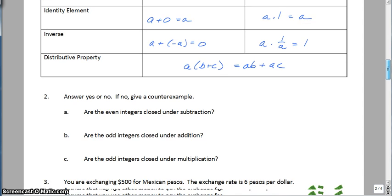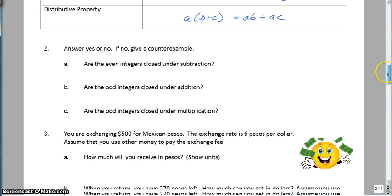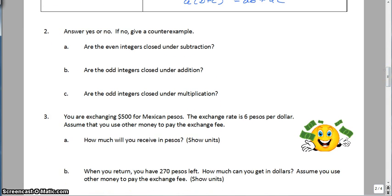So here's number 2 where you will understand closure a little bit better. So we just have to answer yes or no and give a counter example. So basically, you just want to pick a few numbers and test it in the given category. So are even integers closed under subtraction? Basically, take a couple of even integers and test it. What is 10 minus 6? It equals 4. Even minus even equals even. Maybe pick a couple of other. Give it a try. In this case, yes, they are closed.